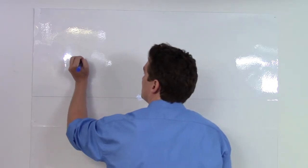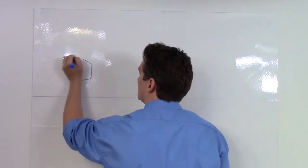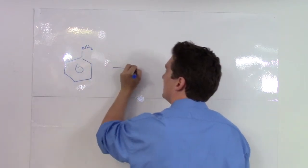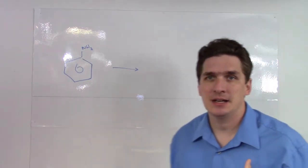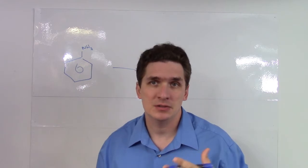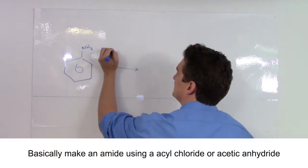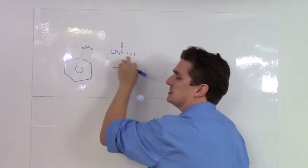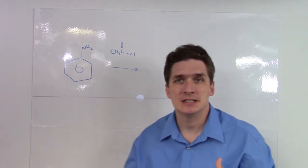For aniline derivatives, if we react the amine with something like thionyl chloride, CH3COCl, or acetic anhydride, this will allow us to undergo a substitution reaction.